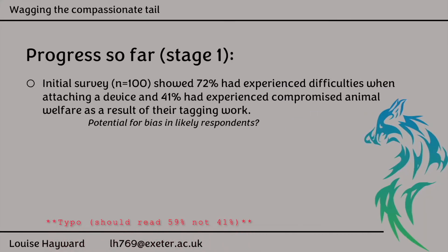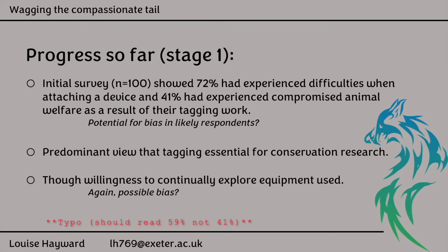So my progress so far — I've carried out an initial survey, and that showed that 72% had experienced difficulties attaching a device, and 41% had experienced compromised welfare as a result of their tagging work. Obviously, there's potential for bias there. While I used Web of Science to try to get an unbiased group, the chance that they fill it in may well be biased by their own experiences. However, 59% hadn't experienced welfare compromise — this is self-reported, so they didn't feel that anything had compromised welfare. So I did have different views represented. The predominant view was that tagging is essential for conservation, but there was a willingness to continually explore the equipment and methods used.